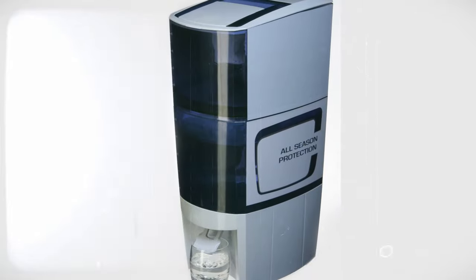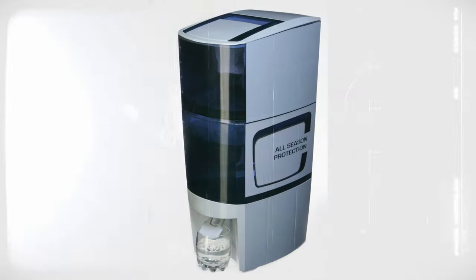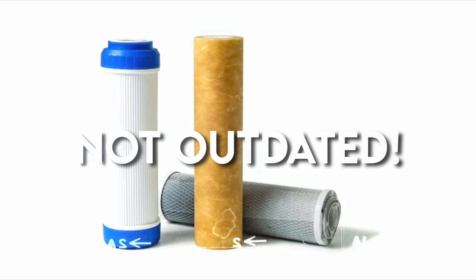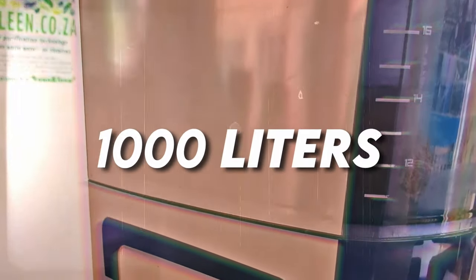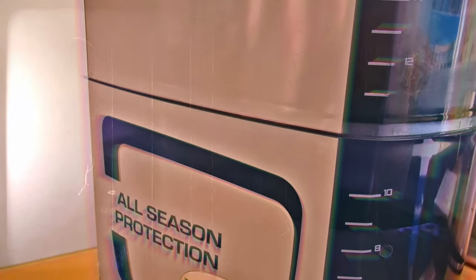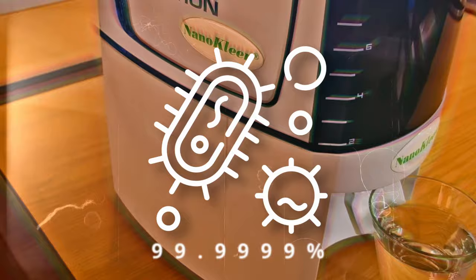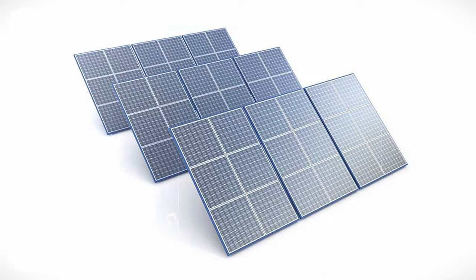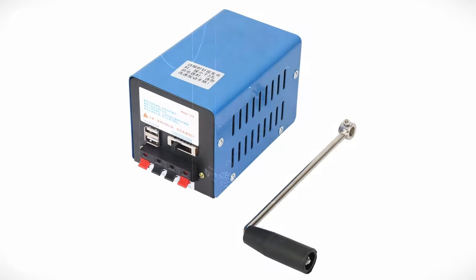First up, we have the Nano Clean Water Purifier 3000. This isn't your grandpa's water filter, folks. Key features: Purifies up to 1,000 liters of water on a single charge. It removes 99.9999% of bacteria, viruses, and microplastics. Solar-powered with a backup hand-crank generator.